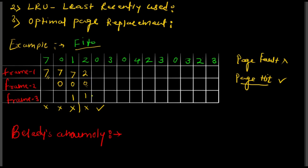Next required is 3. Three is not in memory, so this is a page fault. Which page gets replaced? Out of 2, 0, and 1: 2 was entered first, then 0, then 1 — so 0 was entered first among the current set. Zero gets replaced by 3, leaving memory as 2, 3, and 1. Next, 0 is required but not present — page fault. Out of 2, 3, and 1, since 1 was entered first, 1 gets replaced with 0. Memory becomes 2, 3, 0.